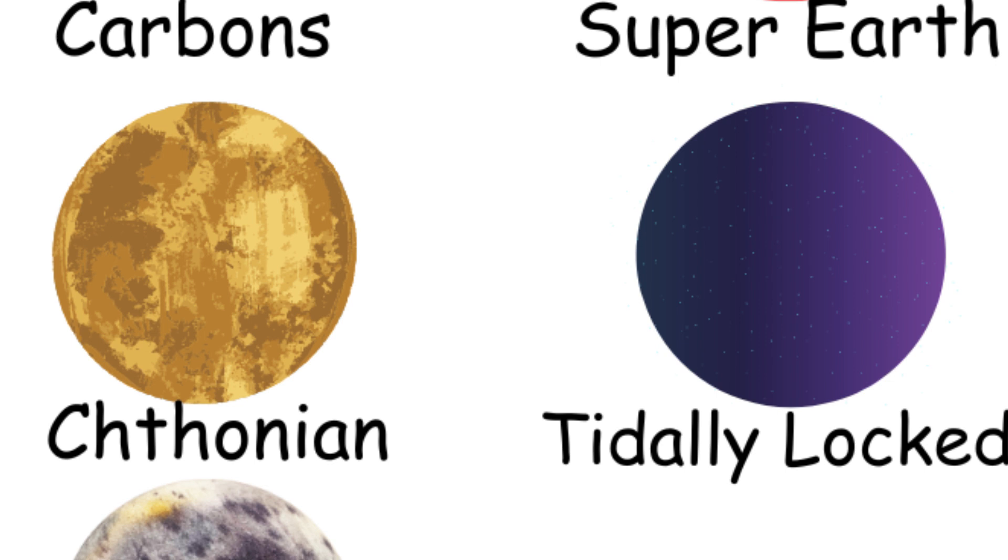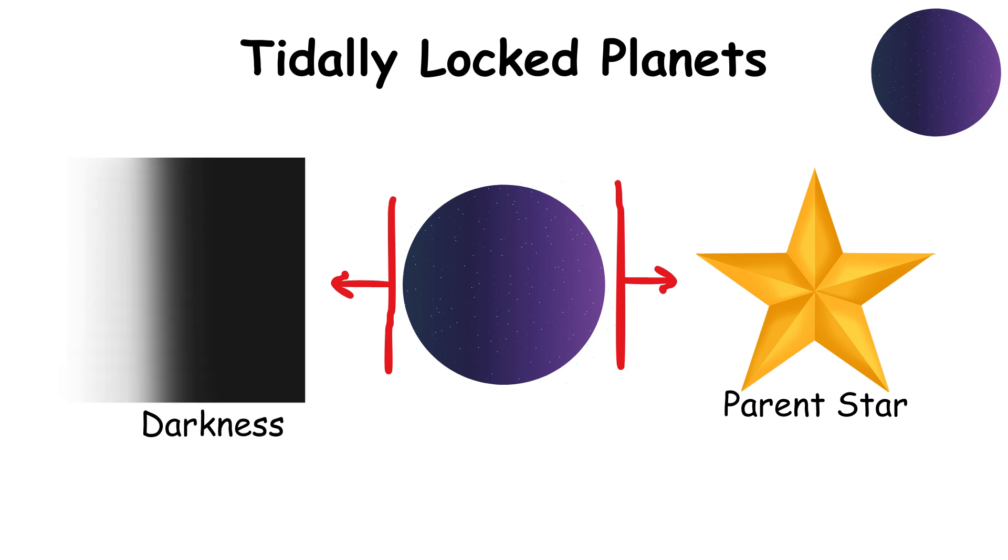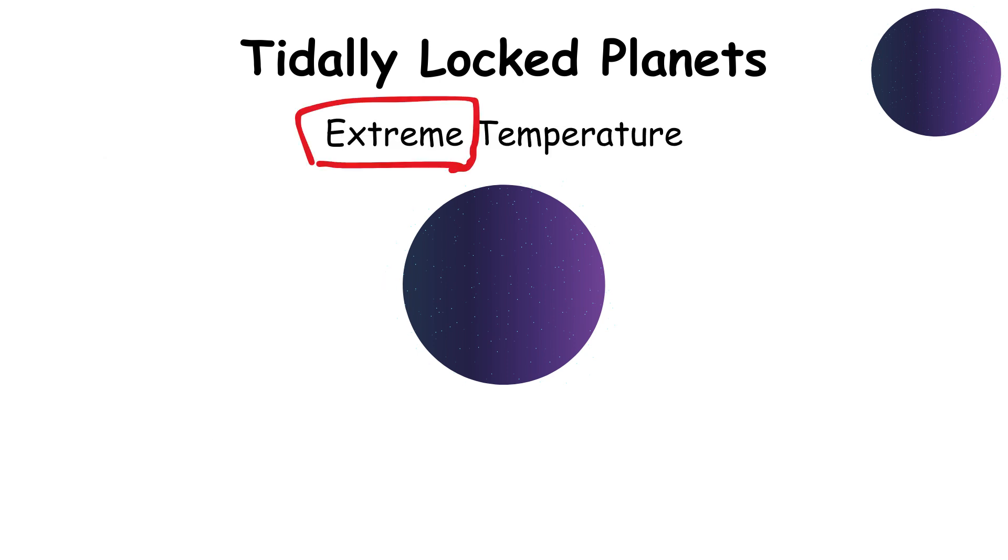Tidally locked planets have one hemisphere permanently facing their parent star, while the other hemisphere remains in perpetual darkness. They often have extreme temperature variations between the day and night sides.